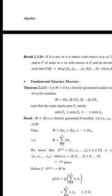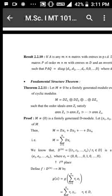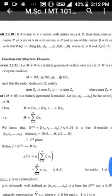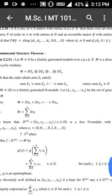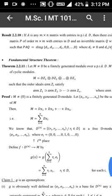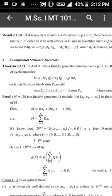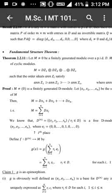Fundamental Structure Theorem: Let M be a finitely generated module over a principal ideal domain D, where M is not equal to zero. Then M is a direct sum of cyclic modules: M = D/z1 ⊕ D/z2 ⊕ ... ⊕ D/zs, such that the annihilator ideals satisfy ann(z1) ⊇ ann(z2) ⊇ ... ⊇ ann(zs).